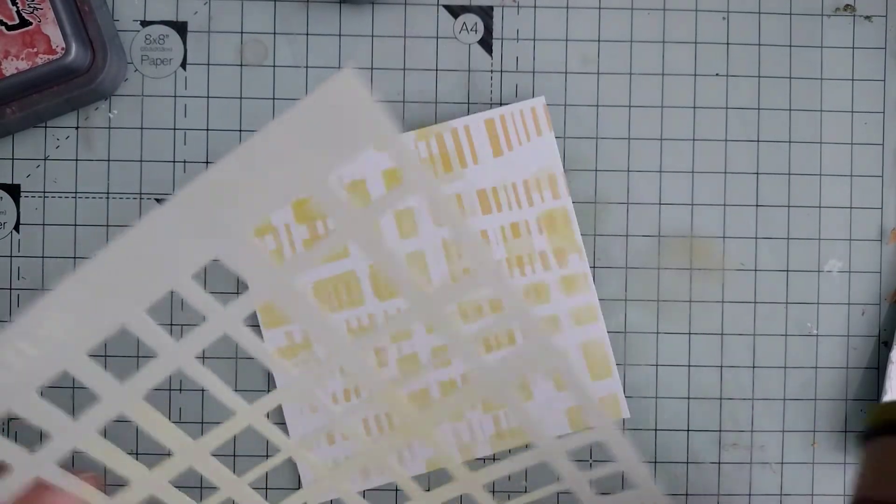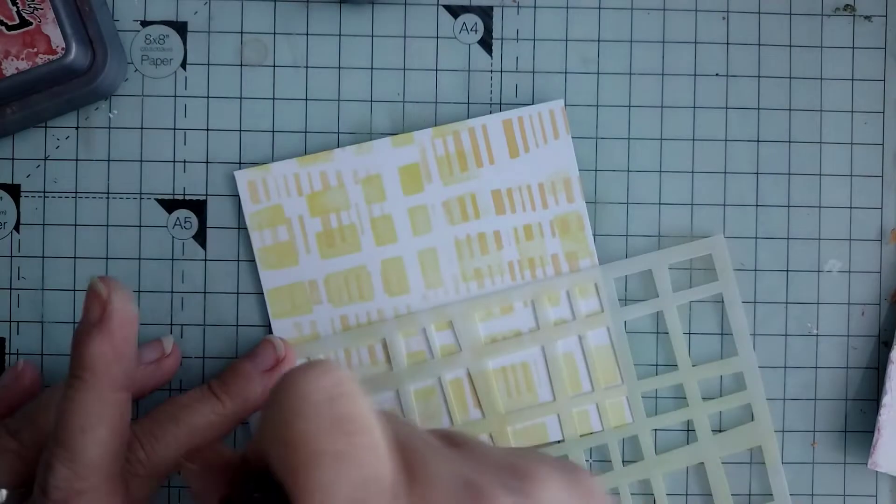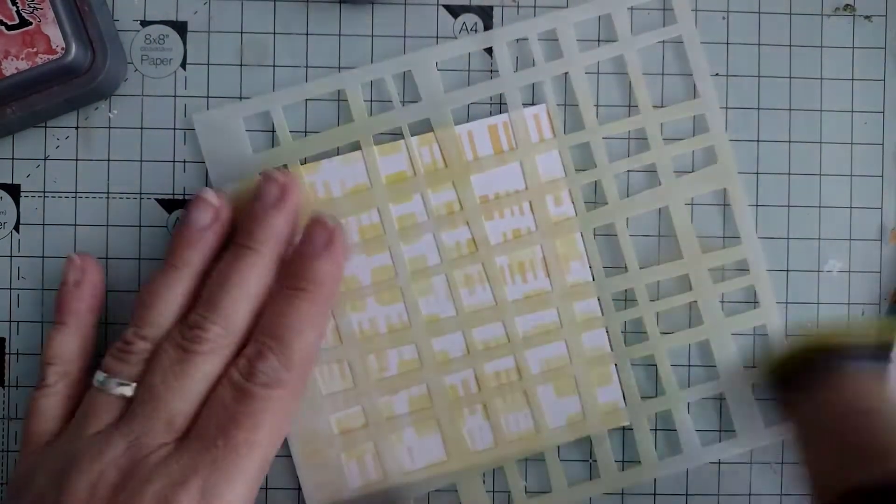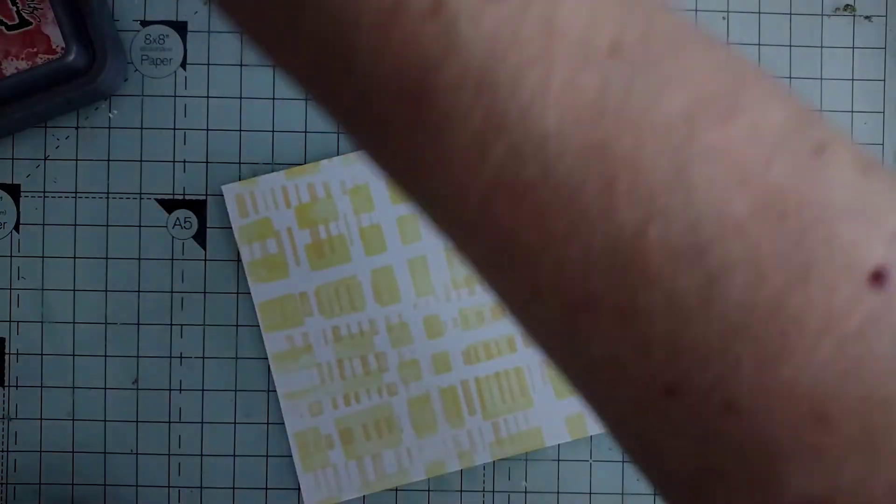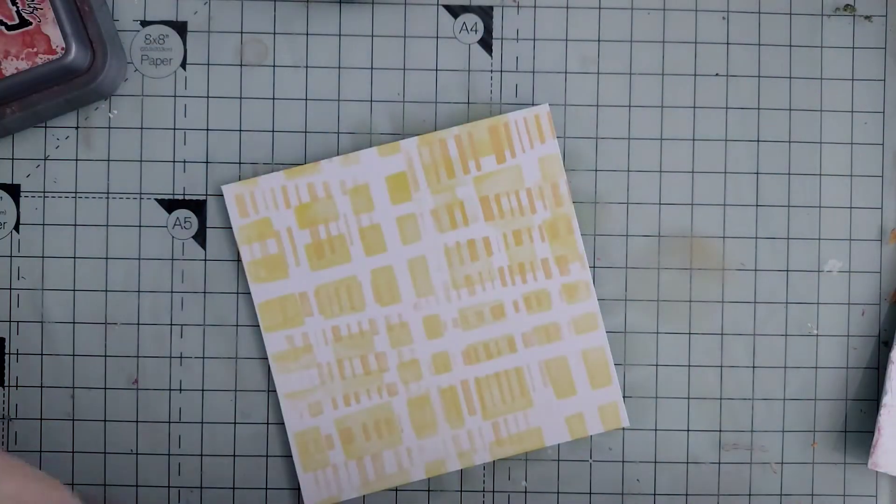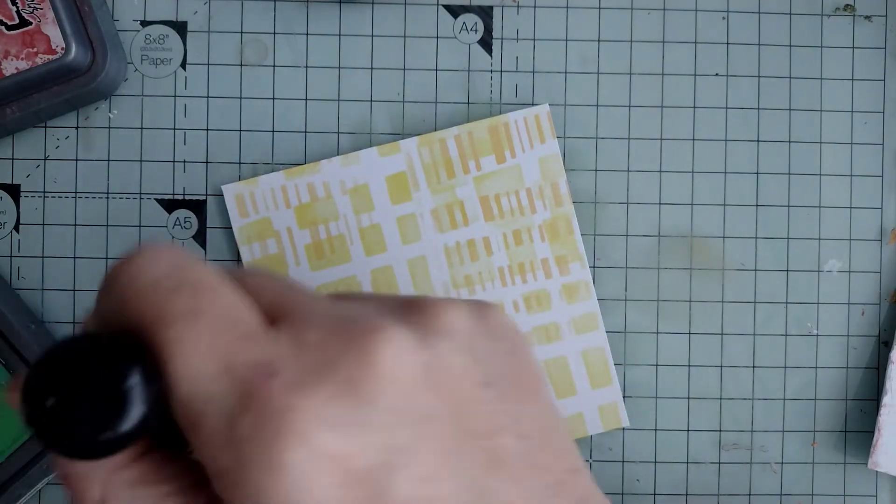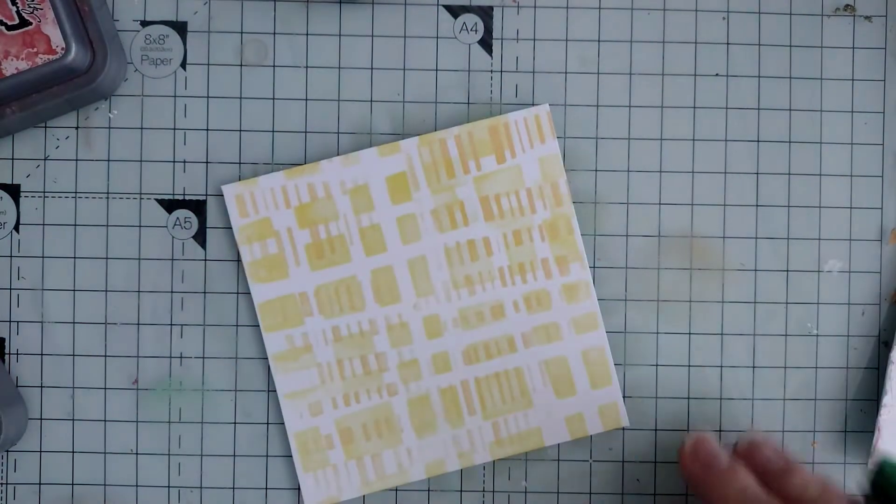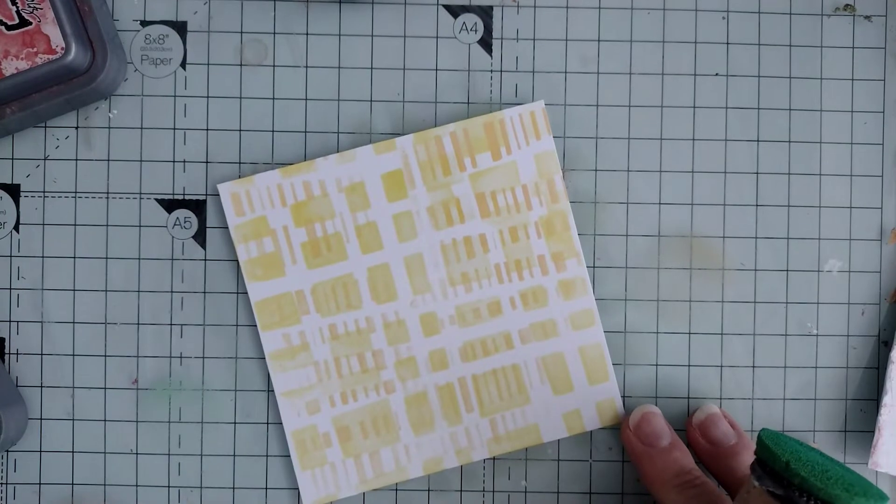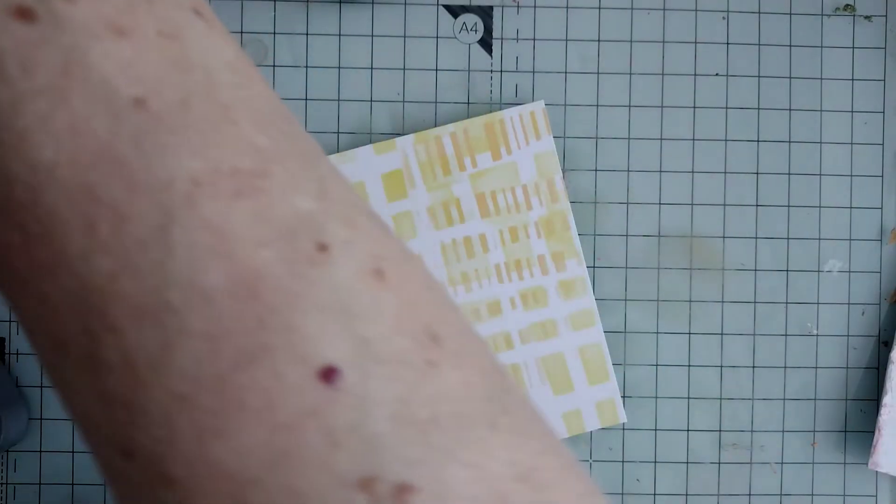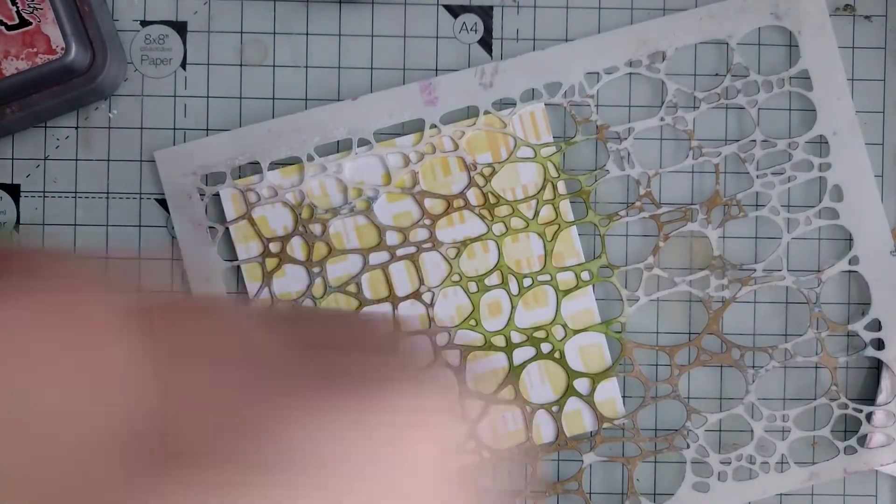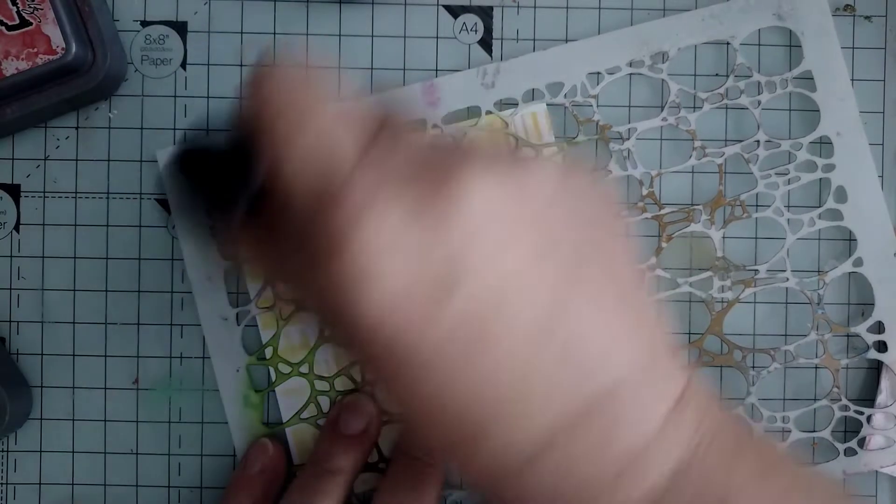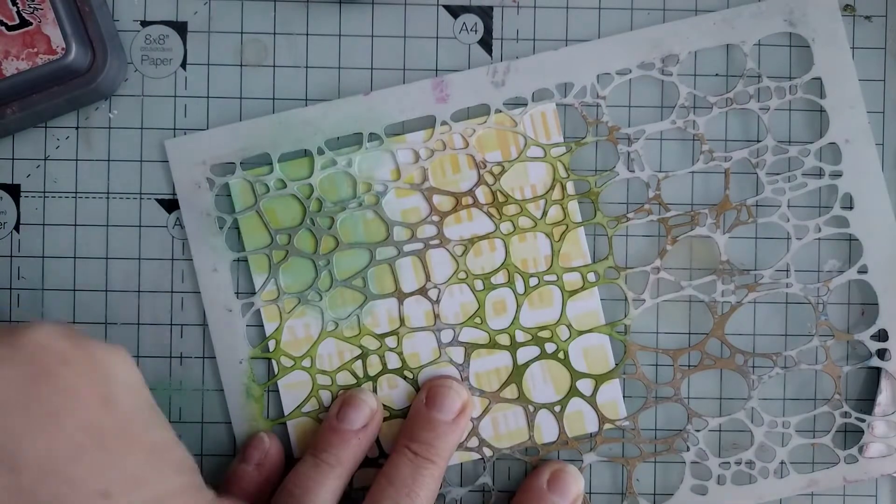That will do. Right, next I'm going on to some cracked pistachio. What should we do with that? Let's have a bit of this stencil here I think, sort of a bit of an organic-y, stony kind of thing.